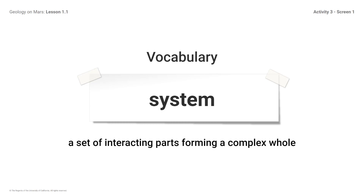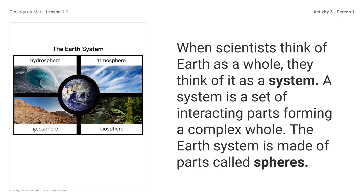Vocabulary — System: a set of interacting parts forming a complex whole. Reminder to look at the glossary if you need more support. Thinking about systems helps scientists in all different areas of science simplify what they are studying so they can focus on the roles of and interactions between different parts of the system. When scientists think of Earth as a whole, they think of it as a system.